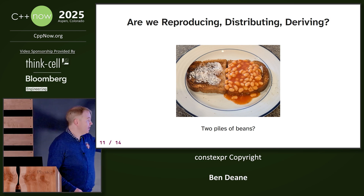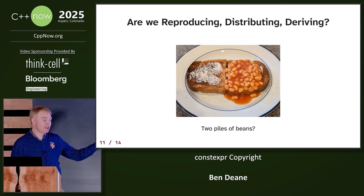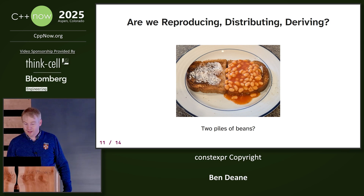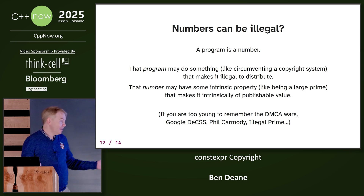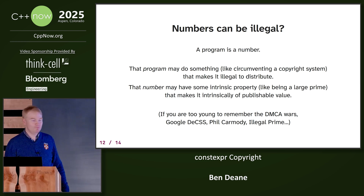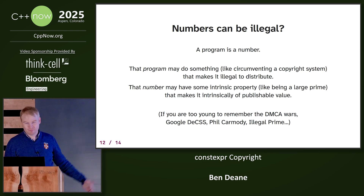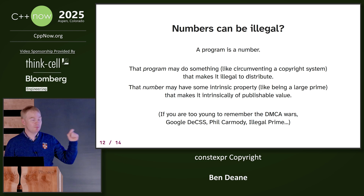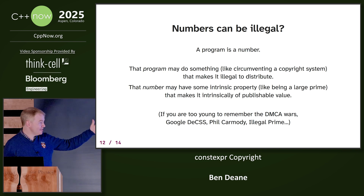The sensible answer to the question is no, but we're quite happy to define two piles of beans — a pile of beans can be zero beans to us, that's fine. We ship numbers. When is a number far enough from its origin to be considered unencumbered by copyright? The boundary is not well-defined. In the past, we've had situations where numbers can be illegal because they are programs or keys that circumvent something, but they might also have some intrinsic property like being a large prime. You can look up the DMCA wars, or Phil Carmody has this illegal prime.